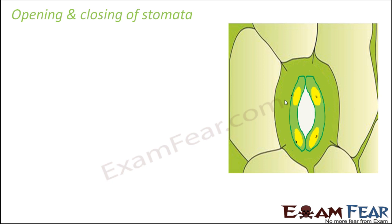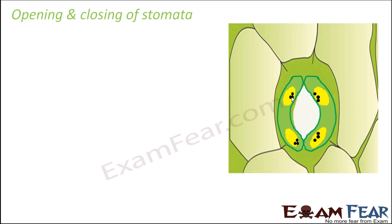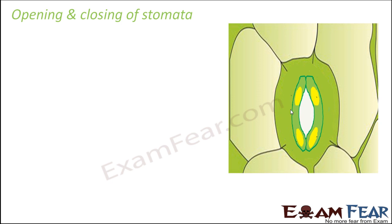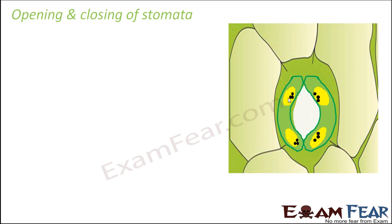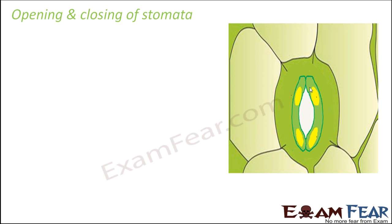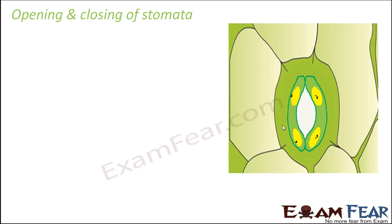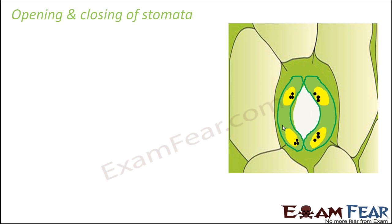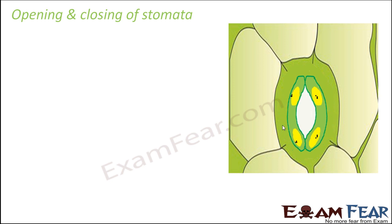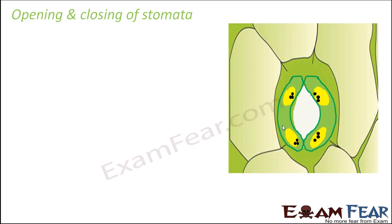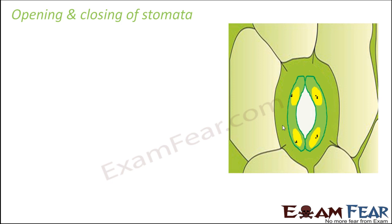In presence of sunlight, potassium ion concentration increases, water potential decreases, water enters inside, and the cells swell up. Because the inner wall is thick and outer wall is thin, bending occurs and the stomata opens. The closing of stomata is exactly the opposite — the concentration of potassium decreases, water starts flowing out of the guard cells, the guard cells shrink, and as a result the stomata closes.